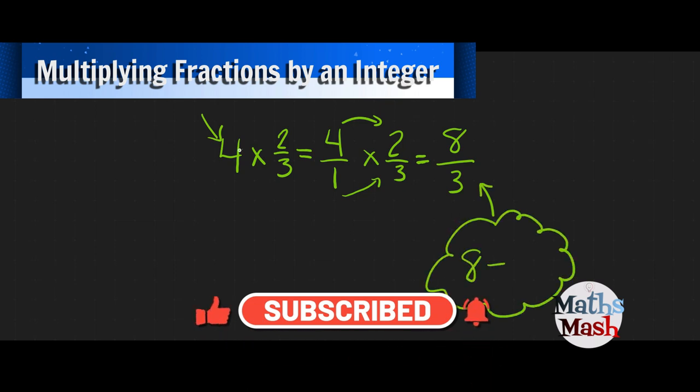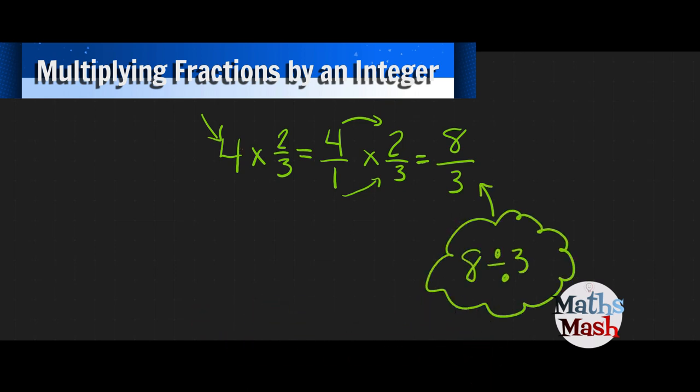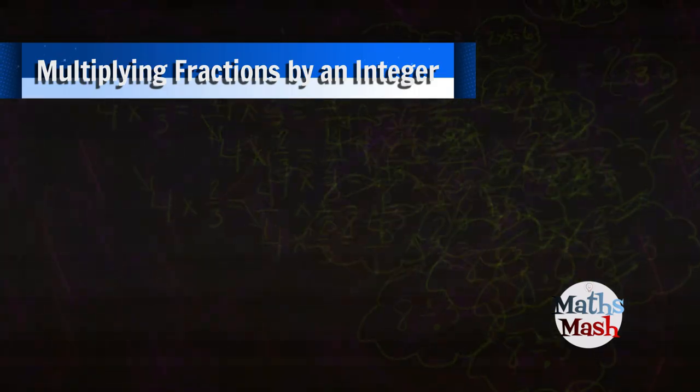Now I just say how many times does 3 go into 8, or 8 divided by 3? That's going to give me 2 because 2 times 3 is 6, and that gives me 2 left over. So that goes as my numerator and 3 as my denominator. I hope you found that helpful. See you next time.